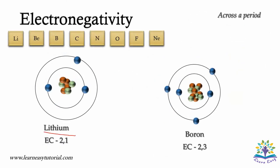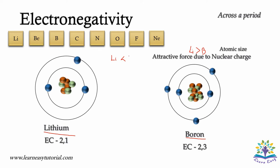Now let's consider the example of lithium and boron. The atomic size of lithium is greater compared to that of boron. Therefore, the valence electrons of lithium will experience less force of attraction than boron. Hence, an electron in the vicinity of boron will experience a greater force of attraction by the nucleus than an electron in the vicinity of lithium. Therefore, the electronegativity of boron is greater than that of lithium. Hence, across a period, the electronegativity increases.